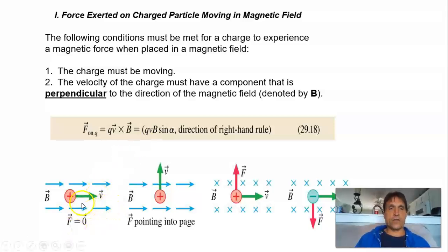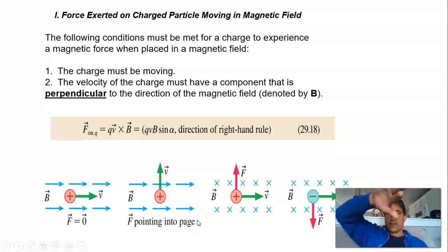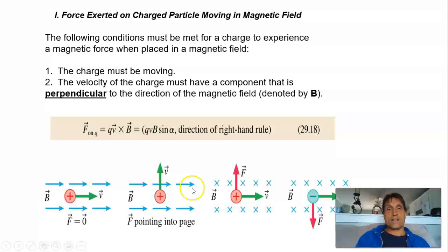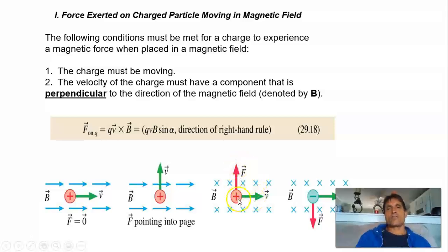Let's practice with the right-hand rule. If v and B are parallel, you get no force. In one case, you have the velocity pointing up and the magnetic field pointing to the right. If you point your fingers along the velocity upward with your palm pointing to the right in the direction of B, your thumb should be pointing into the page — so the magnetic force is into the page. In another example, if the velocity is to the right and the magnetic field is into the page, you point your fingers in the direction of velocity with your palm pointing down toward the field, and your thumb points upward — so the force is upward.